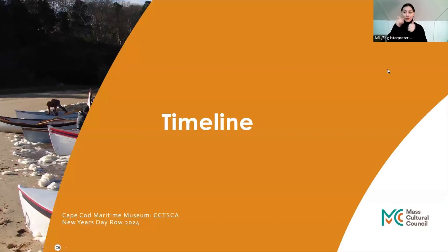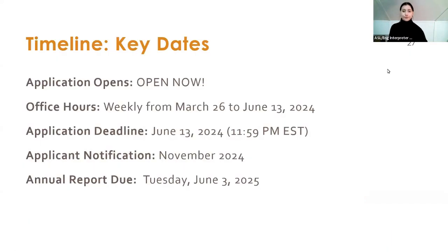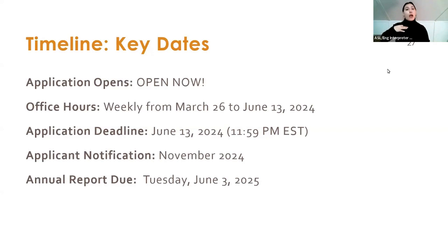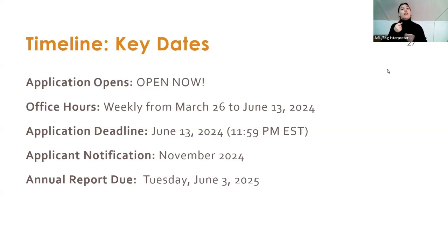The application is open now — you can go into our grants management system, sign up for an account or log into your account, and complete it today if you like. We have office hours and can provide one-on-one support from now up until the deadline of June 13th. Applicants will be notified in November 2024 if they are receiving a grant, and that's when the contracting process will begin. Organizations that receive a grant will have an annual report due in June 2025.